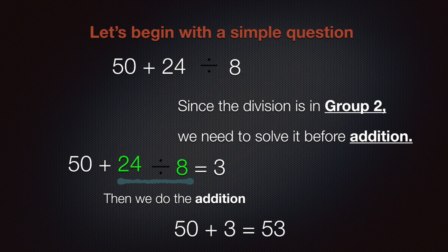Let's begin with a simple question: 50 plus 24 divided by 8. Since the division is in group two, we need to solve it before addition. 24 divided by 8 gives us 3. Then we do the addition: 50 plus 3 equals 53.